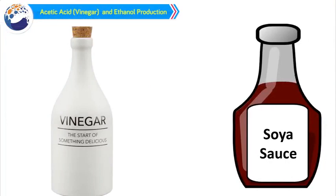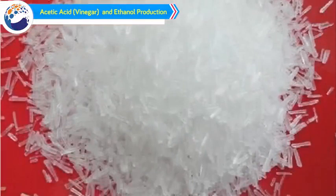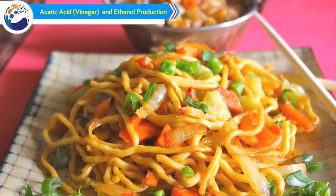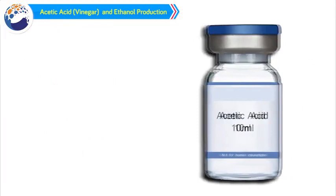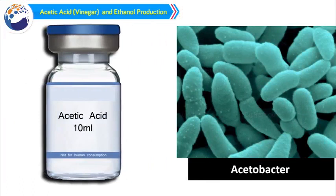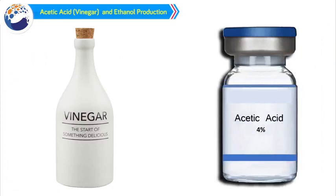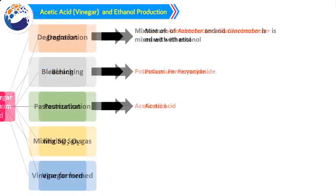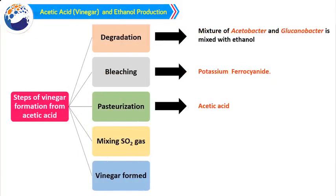D. Acetic acid, vinegar and ethanol production. Ingredients like vinegar, soya sauce and monosodium glutamate (Ajinomoto) that are used in popular Chinese food are produced by microbial fermentation. 1. Acetic acid is an organic acid produced by the action of enzyme Acetobacter aceti. 2. Vinegar is 4% acetic acid (CH3COOH). It imparts sour taste to food, e.g., preservation of pickles. Steps of vinegar formation from acetic acid: 1. Mixture of Acetobacter and Gluconobacter is mixed with ethanol for microbial degradation. 2. Bleaching of acetic acid by potassium ferrocyanide. 3. Pasteurization of acetic acid. 4. Mixing of SO2 gas with acetic acid — formation of vinegar.